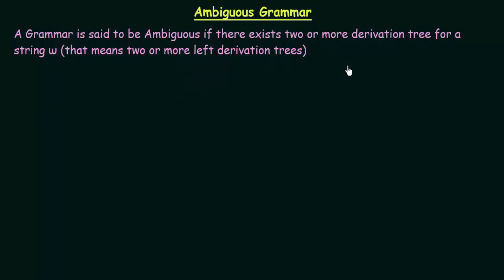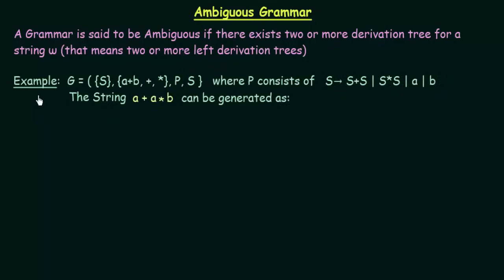Let's take a simple example to understand this better. We have a grammar G which has S as a non-terminal symbol (the variable), terminal symbols A, B, plus, and multiplication. The production rules are: S → S plus S, S → S*S, S → A, and S → B, with S as the start symbol. We want to generate the string A plus A*B, and let's see in how many ways we can generate this string.